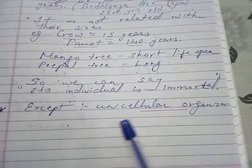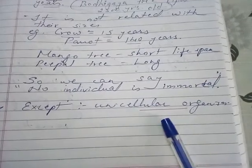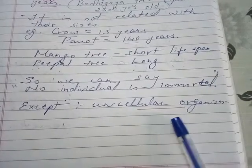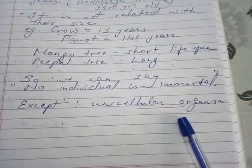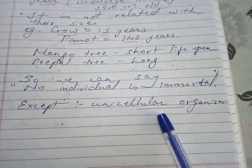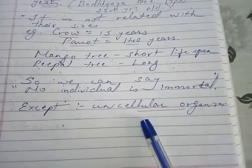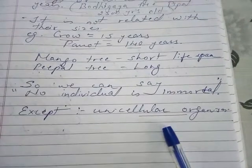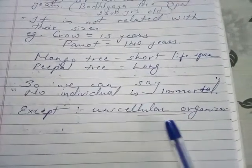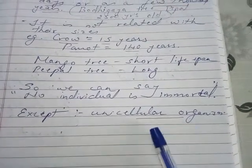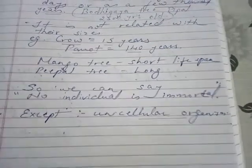This is except for unicellular organisms. For example, in the case of amoeba, it divides into two, so it is said to be immortal. Unicellular organisms are considered immortal.